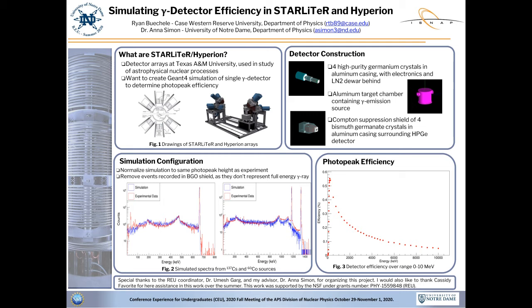To determine the efficiency of the simulated detector at a given energy, I ran the simulation with 5 million mono-energetic gamma ray events and calculated the fraction of the total events recorded in the photopeak. The plot of efficiency up to 10 MeV is shown in the bottom right in figure 3. The maximum efficiency of a single detector is a little over half a percent at around 200 keV. The efficiency quickly drops off as energy goes to zero, as these low energy gamma rays often don't have enough energy to reach the detector and are absorbed by the target chamber or detector casing.